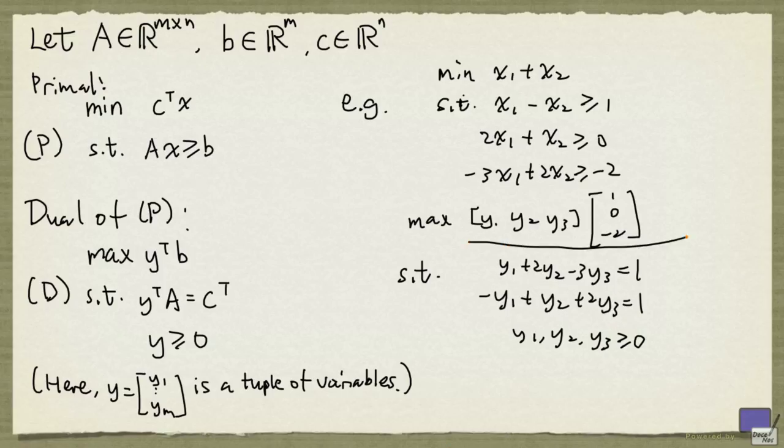And we can rewrite the objective function as well. So it's going to be y1, plus 0y2, minus 2y3. So this is the dual problem of this problem here.